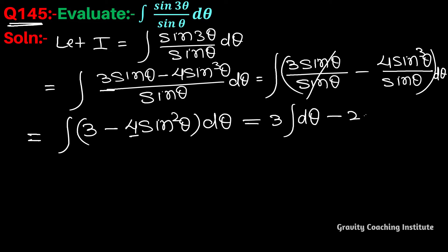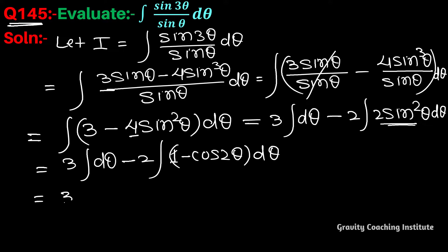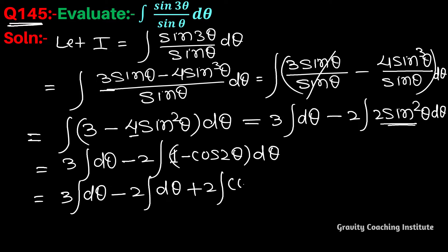Using the formula 2sin²θ equals 1 minus cos(2θ), so 4sin²θ equals 2 times (1 minus cos2θ). This gives us 3 times integration dθ minus 2 times integration dθ plus 2 times integration of cos(2θ) dθ.